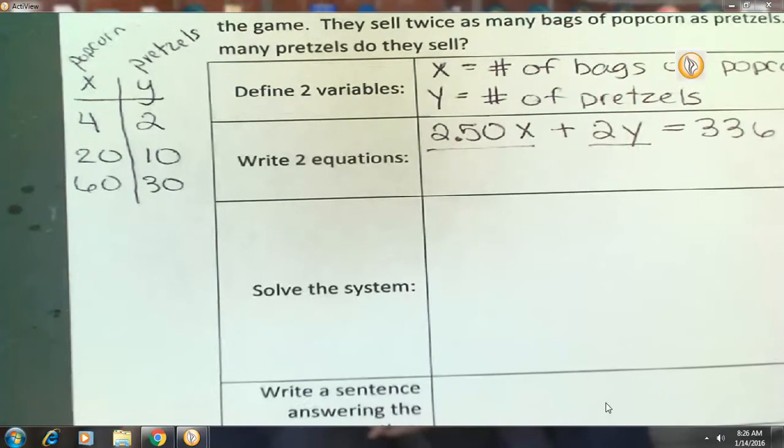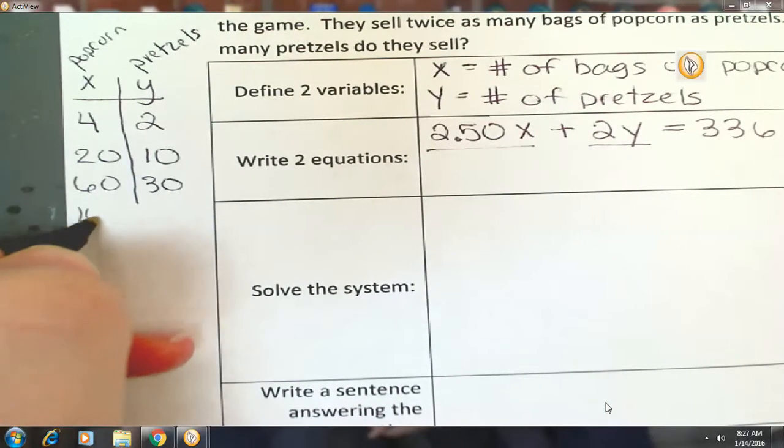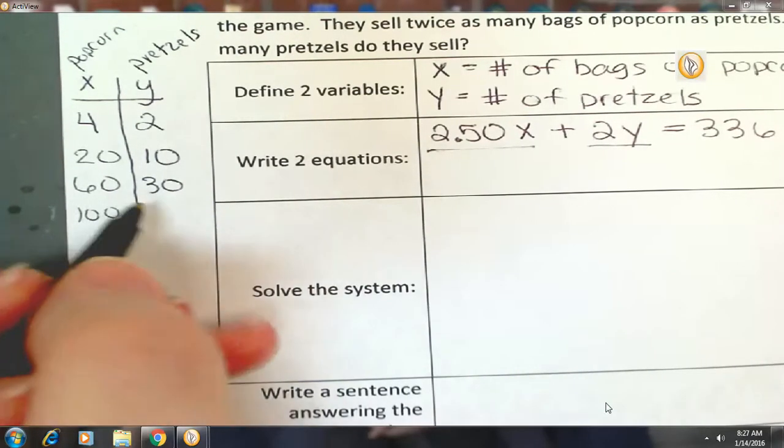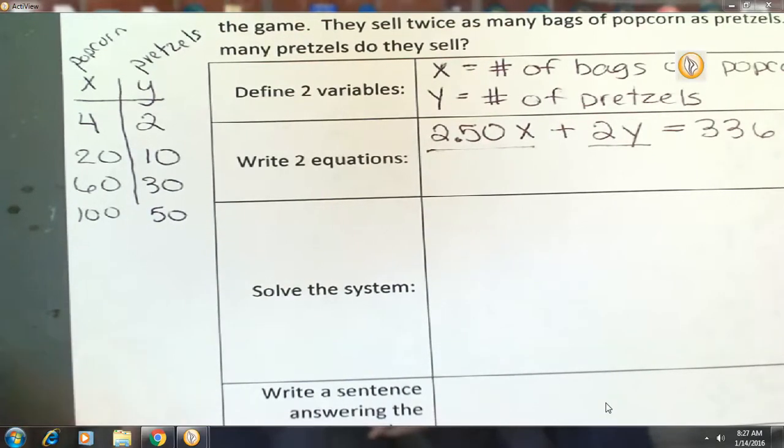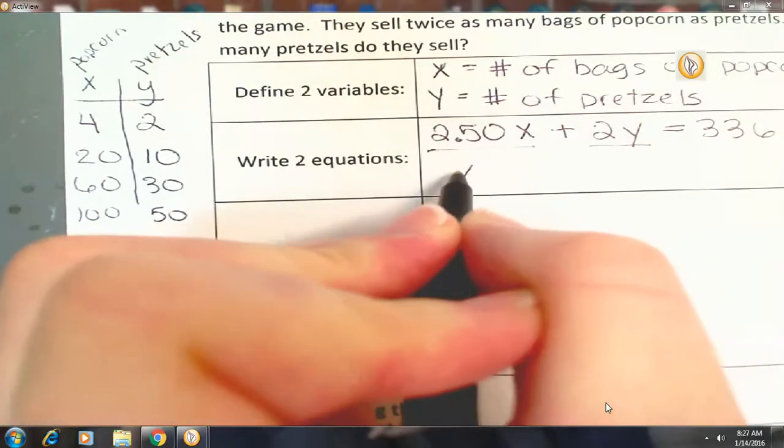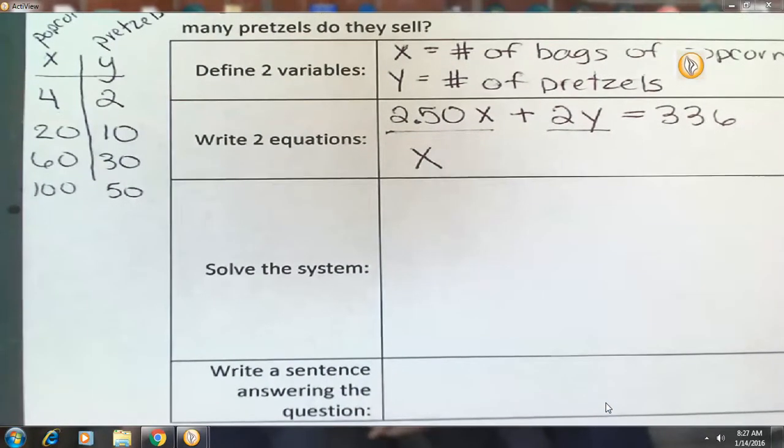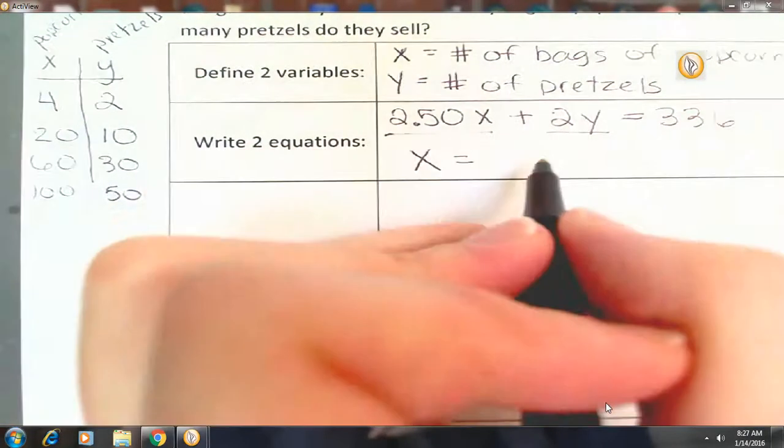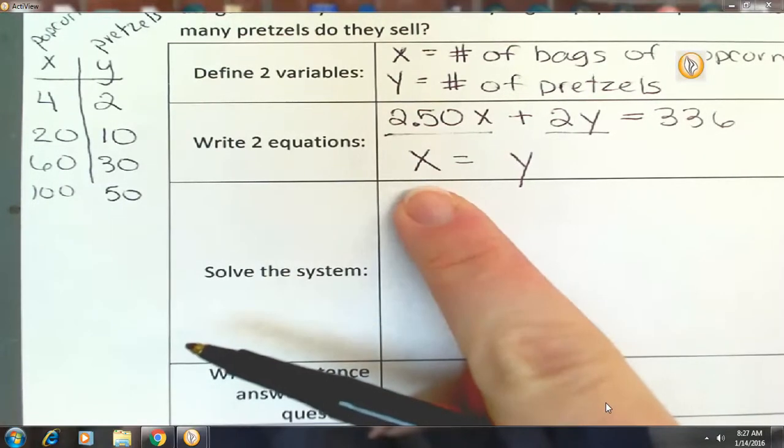So we're trying to make an equation. In an equation, both sides have to be equal, correct? So let's think of this. What if they sold 100 bags of popcorn? How many pretzels did they sell? 50. Let's say they sold X bags of popcorn. We don't know what that X is. We want to know how many pretzels, Y, they need to sell for it to be equal to the number of bags of popcorn.